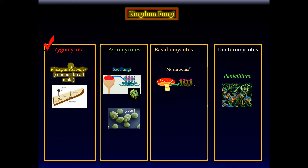Previously we have talked about the phylum Zygomycota. Today we shall talk about the Ascomycota, the second category of the four major phylums, the four major divisions of Kingdom Fungi. From the previous time, the Zygomycota — one example was the rhizopus mold, the bread mold, the one that made the spores with those funky structures.